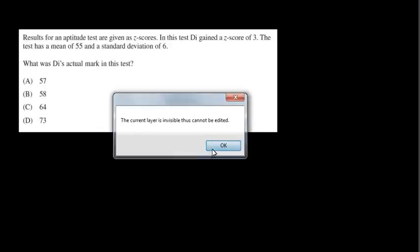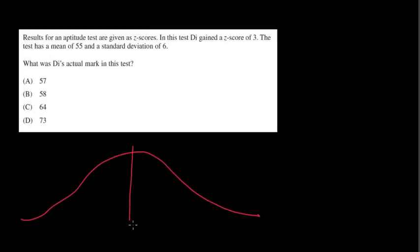Next question: results for an aptitude test are given as Z scores. In this test, Di gained a Z score of 3. I will draw my little bell curve. The test has a mean of 55 and a standard deviation of 6. So one standard deviation is going to be 61, two standard deviations is going to be 67, and three standard deviations is going to be 73.